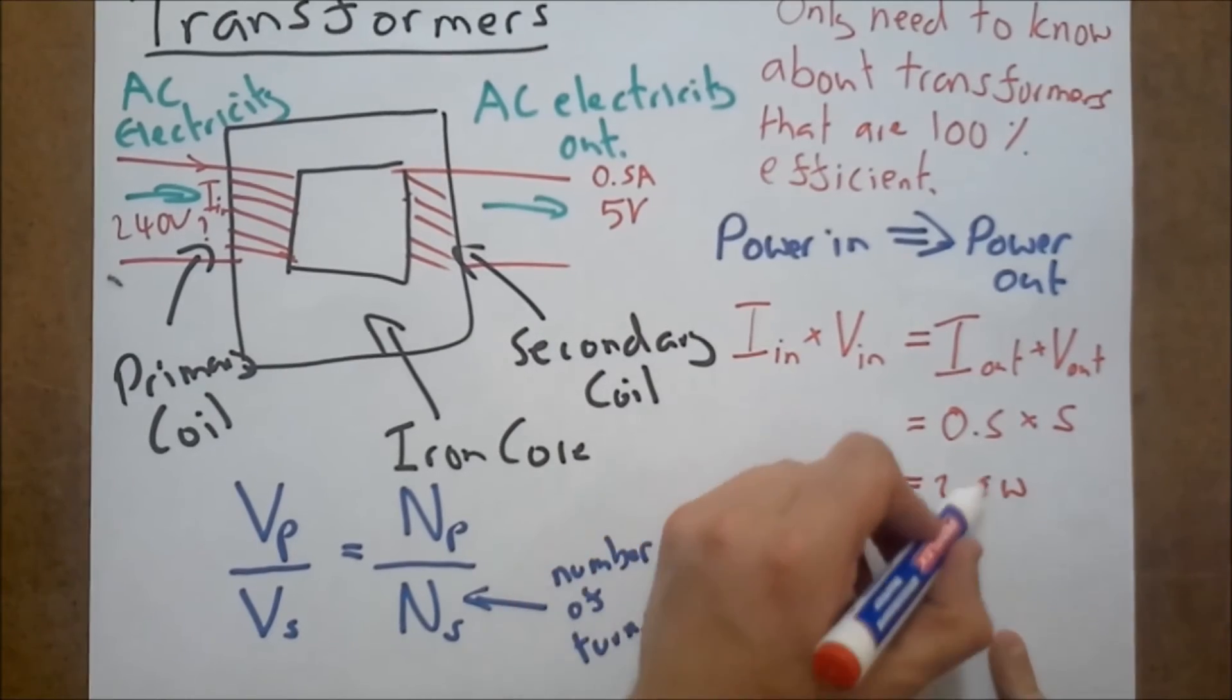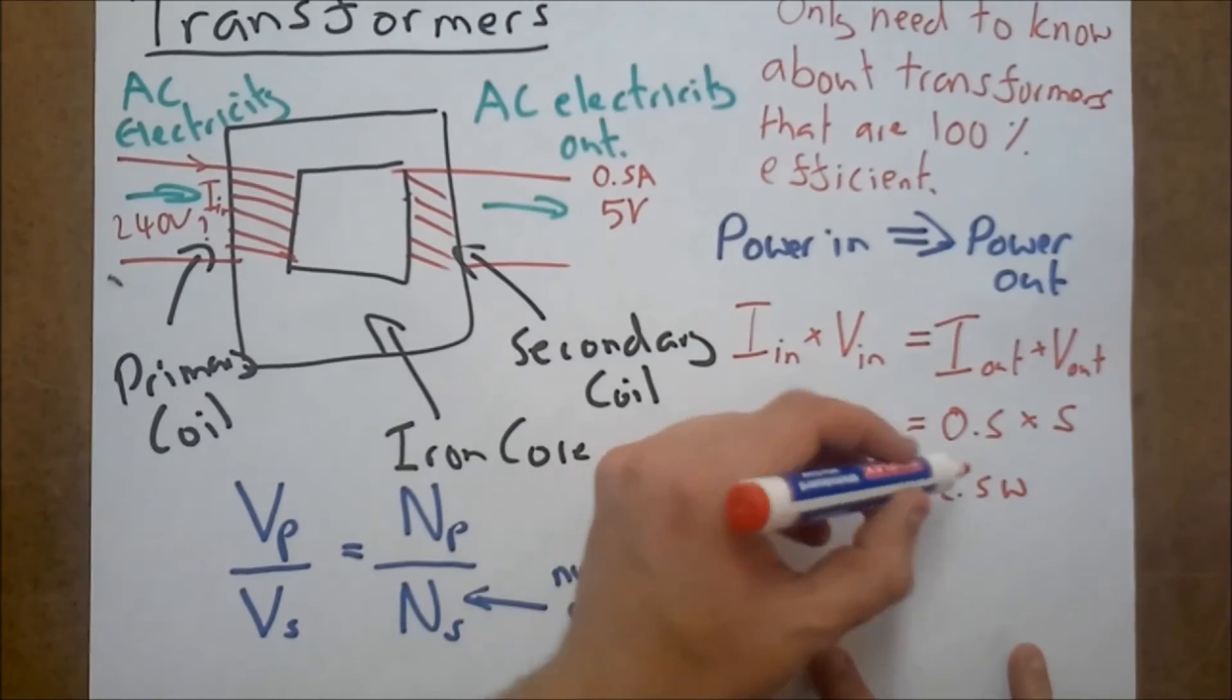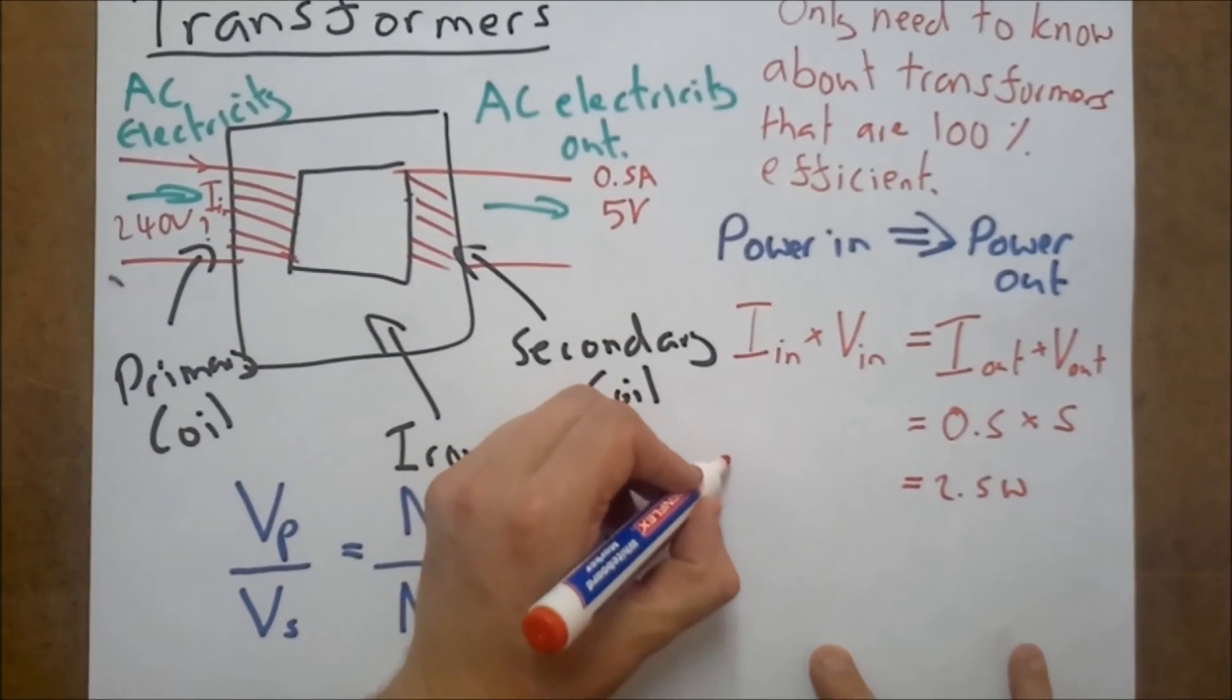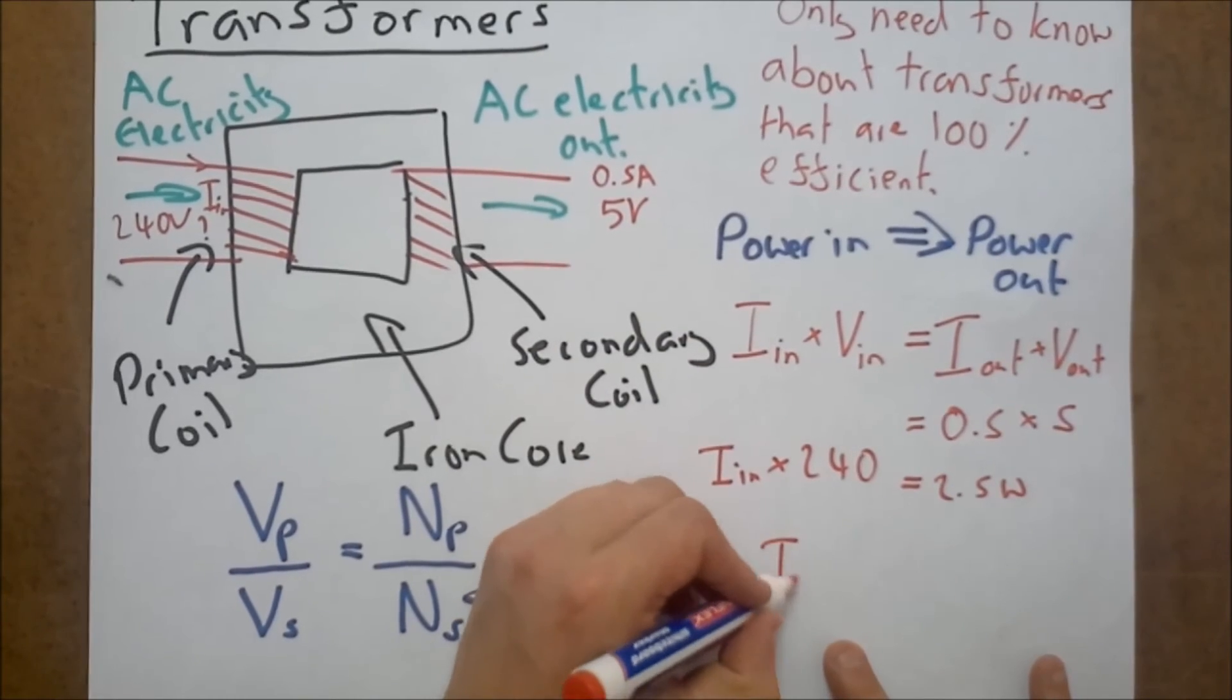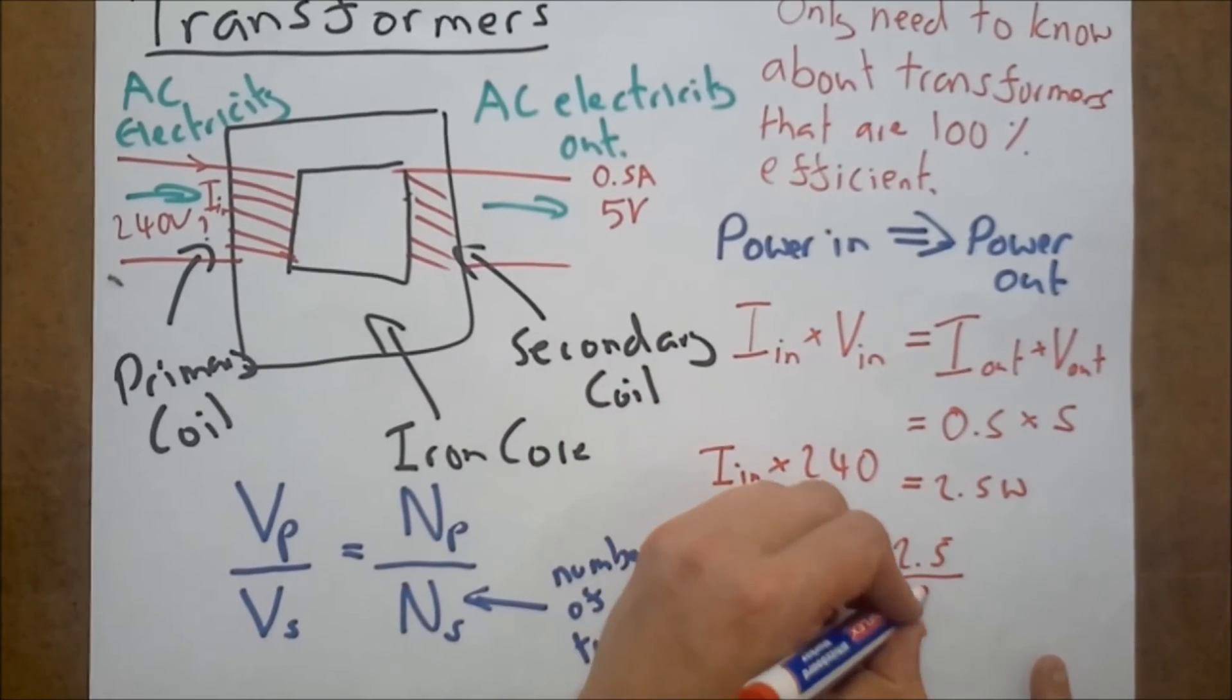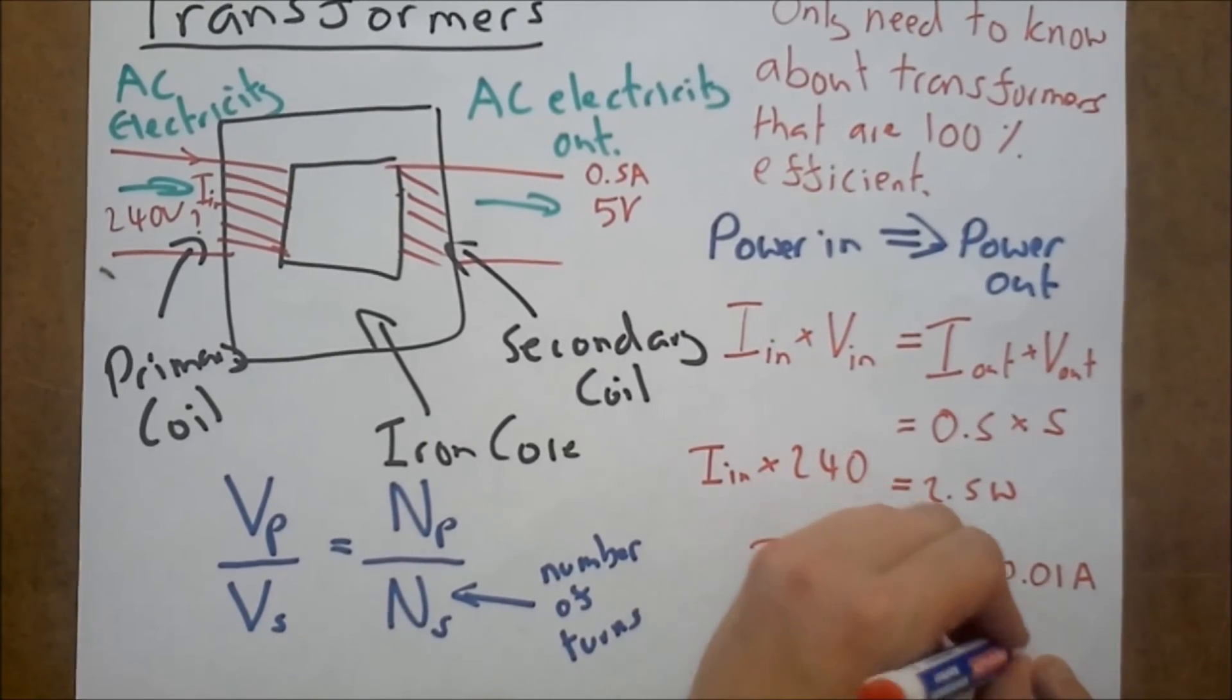Okay so what was our current going in? Well we know the power going out must be 2.5 and because our transformers are a hundred percent efficient the power going in must equal the power going out. So we must have the I in times by 240 must equal 2.5 watts. So I in is going to equal 2.5 divided by 240, and we get an answer of 0.01 amps, basically 10 milliamps.